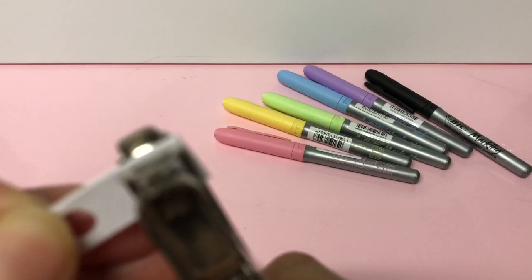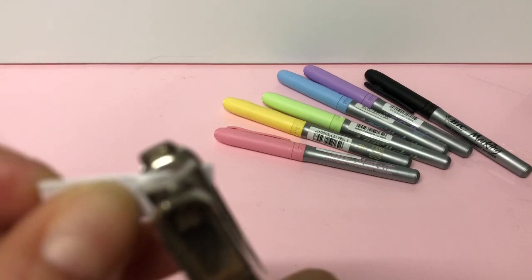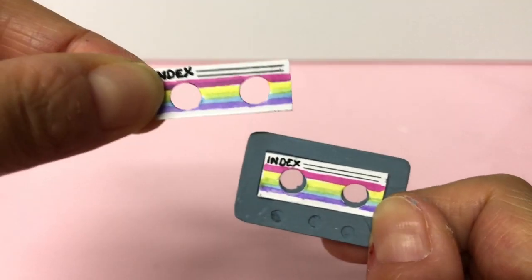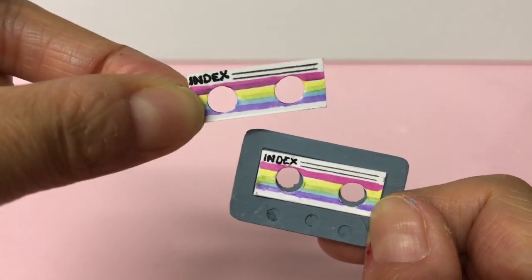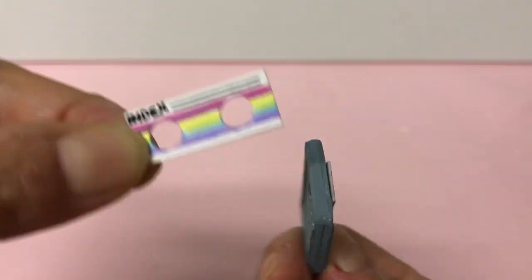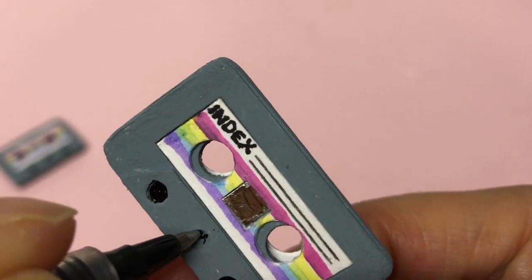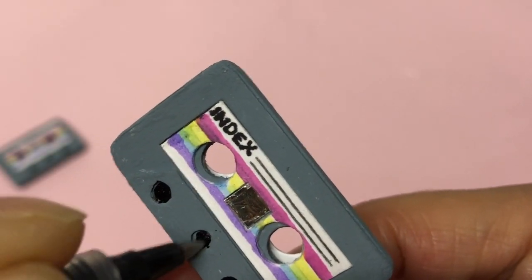Decorate your labels using colored markers, then glue into the window. To bring back the finer details, use a black marker and color in the smaller holes.